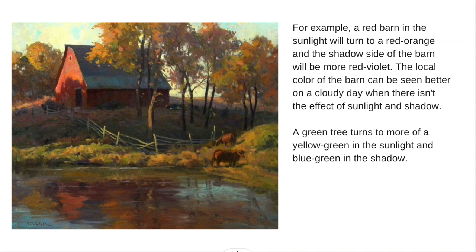The local color of a barn can be seen better on a cloudy day when there isn't bright sunlight changing it. On a cloudy day you have more of just the local color, because without direct sunlight there's no warm shift on lit surfaces and no darker cool shadows. On a sunlit day, where the sun hits a red barn it turns red-orange, and the shadow turns red-violet. A green tree turns yellow-green in sunlight and blue-green in shadow. I always add the appropriate shadow color to the darker shadow value.